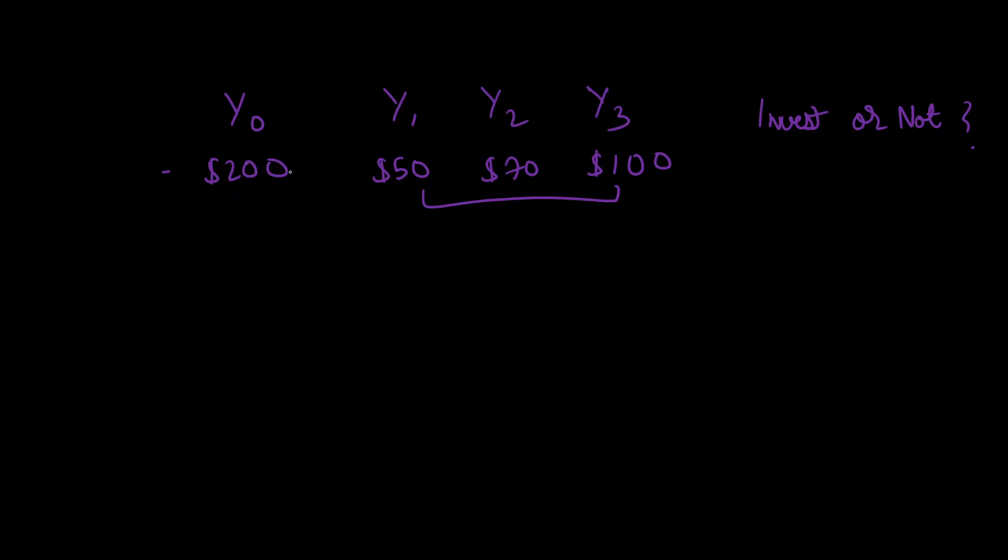The amount you're getting in year one, year two, or any time in the future is going to be less valuable to you, which we found out in the last video. Since you can always invest that money in some other project, maybe just deposit that money in a bank which will guarantee you a certain rate of interest. The way we account for this opportunity cost of investment is by figuring out the present values of all these future cash flows.